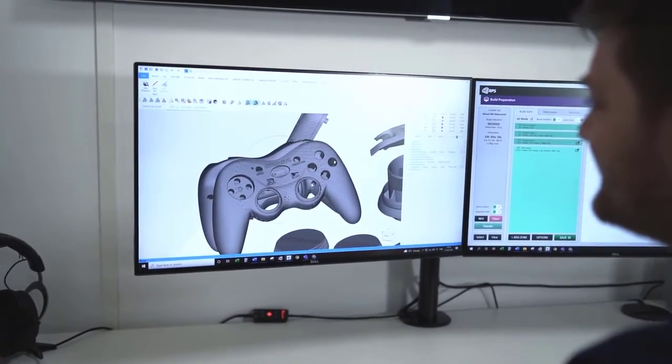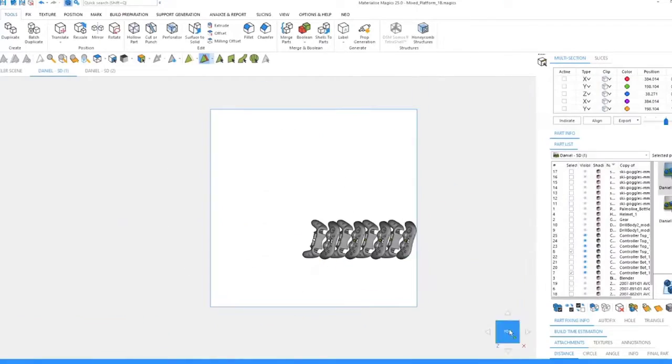Build preparation software sets up the build and is sent to the NEO for print via titanium software.